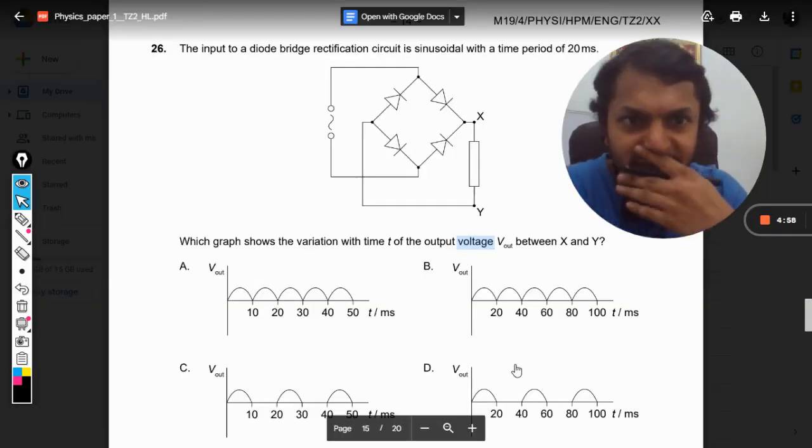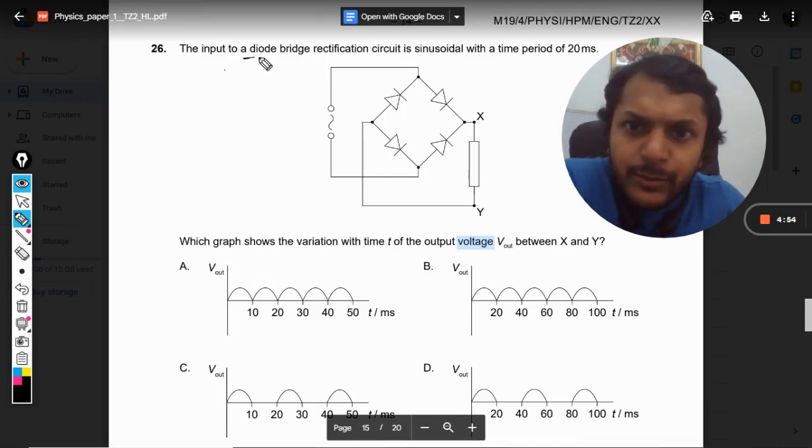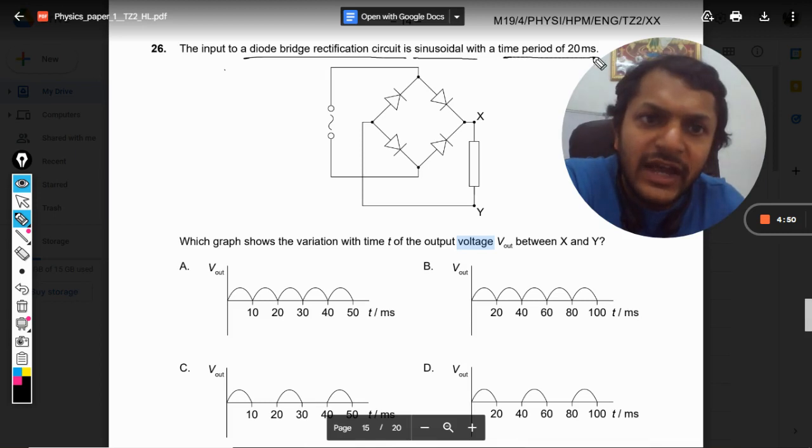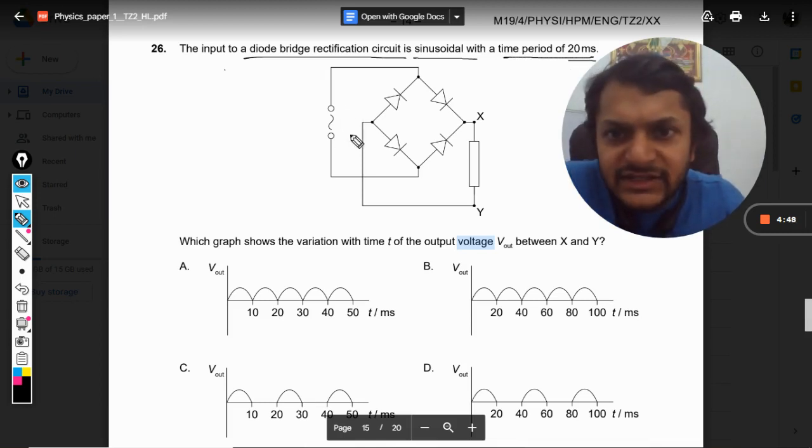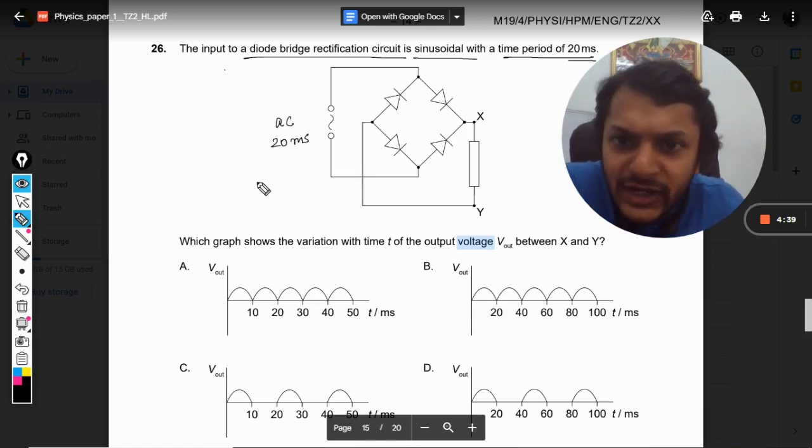Okay dear students, let us see what is there in this question. The input of a diode bridge rectification circuit is a sinusoidal with a time period of 20 milliseconds. It means they're talking about this input signal which is alternating current, and the time period is 20 milliseconds. So in 20 milliseconds it completes one revolution, positive or negative.